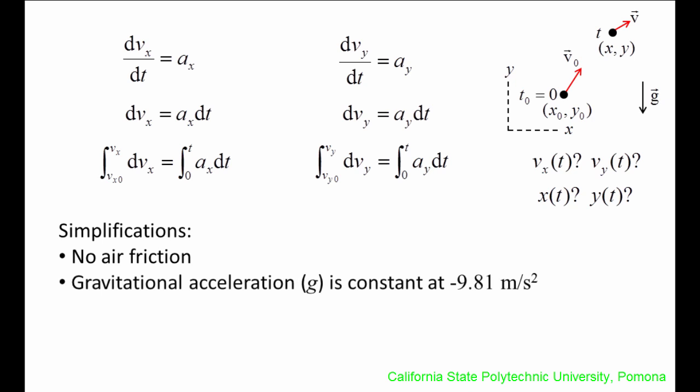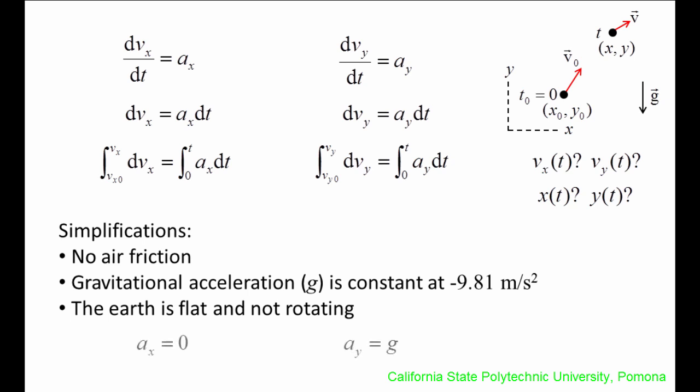Second, we will assume that the gravitational acceleration vector always points downward in the negative y-direction and has a constant value of negative 9.81 meters per second squared. This assumption is okay if the object does not travel very high from the surface of the Earth. Finally, we will assume that the Earth is flat and does not rotate. This assumption is okay if the object does not travel very far in the x-direction. Using these three simplifications results in ax being equal to zero and ay being equal to the gravitational acceleration g.